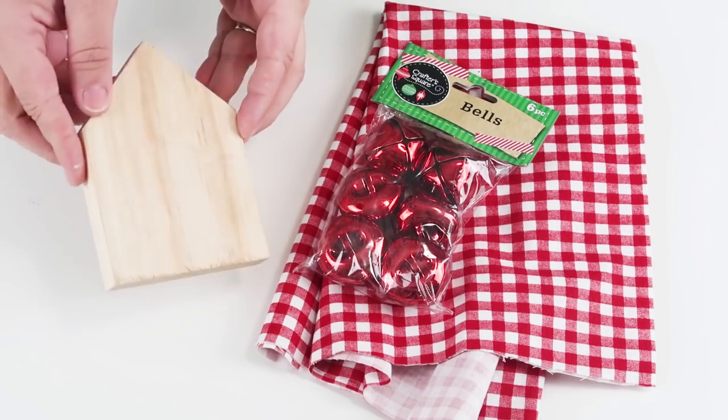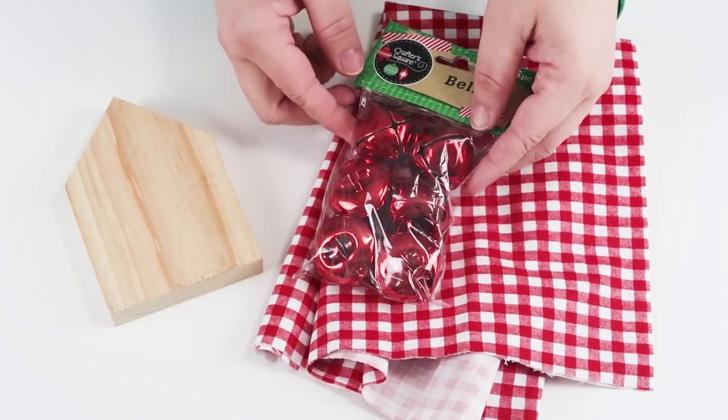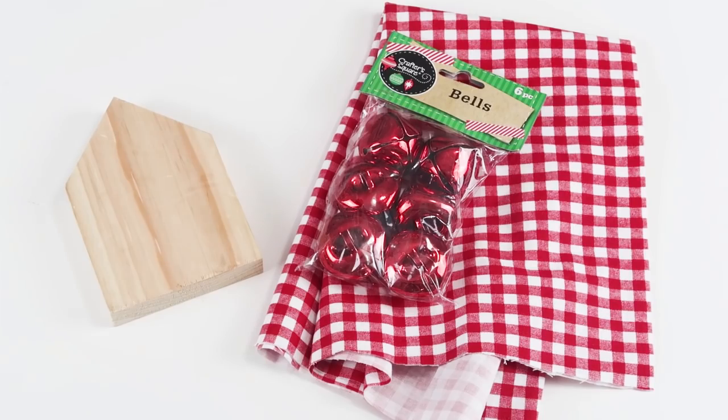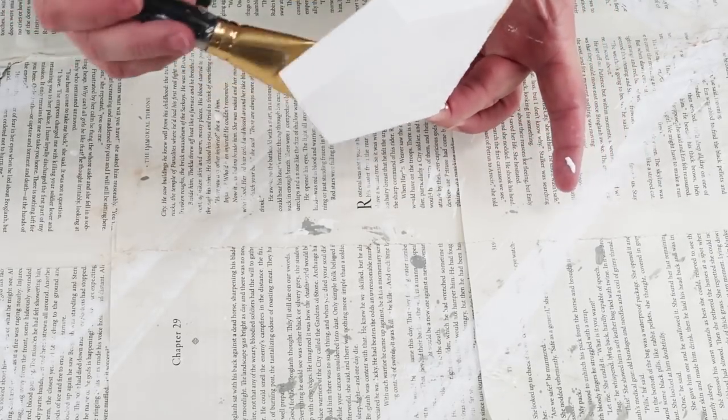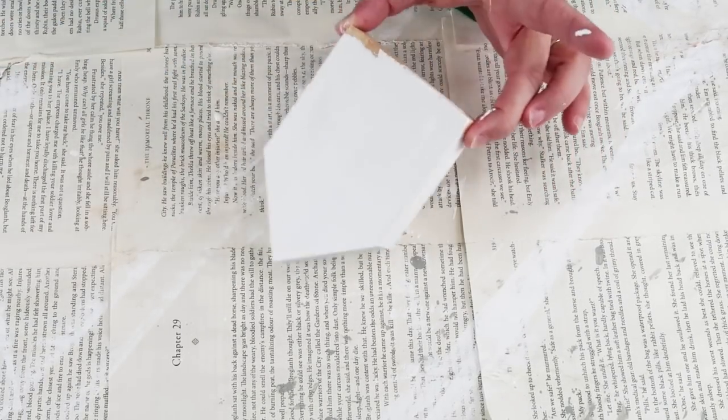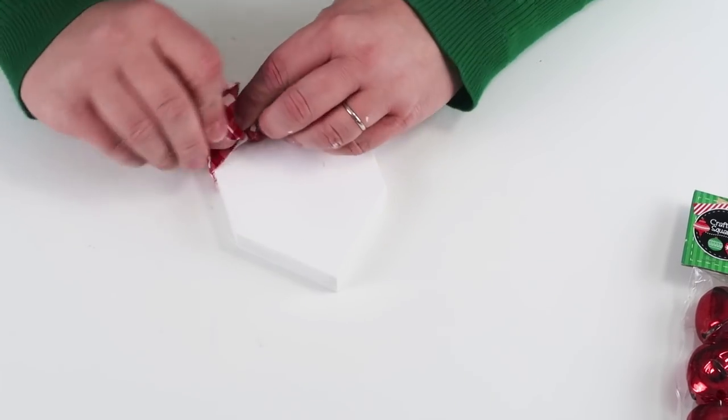For this DIY it's super simple. We're going to take this piece of wood, some bells, and some fabric. I'm going to start by painting the wood white. This is going to become a cute little house home decor piece.